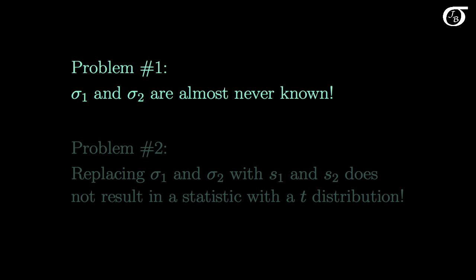The problem that we encounter again is that the population standard deviations sigma1 and sigma2 are almost never known. In the one sample case we simply replaced the population standard deviation with the sample standard deviation, and we ended up with a t-statistic.